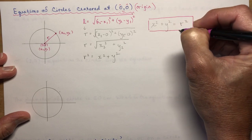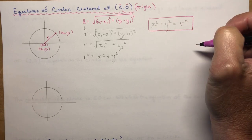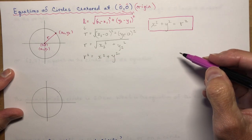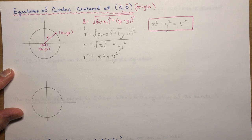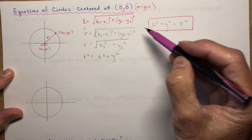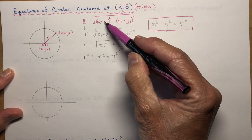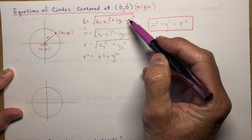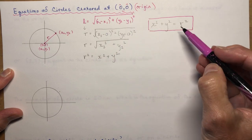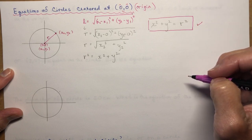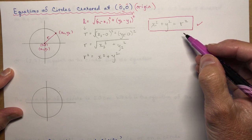In Grade 10 Ontario curriculum, you don't need to know what happens when you move a circle around. Although if you're interested, you can leave a comment and I can do a lesson on that. All it means is you change these numbers to the center of your circle — so instead of 0 and 0, you might have a center at 2 and 3. But this is the one you need for Grade 10 academic math in Ontario: x² + y² = R².